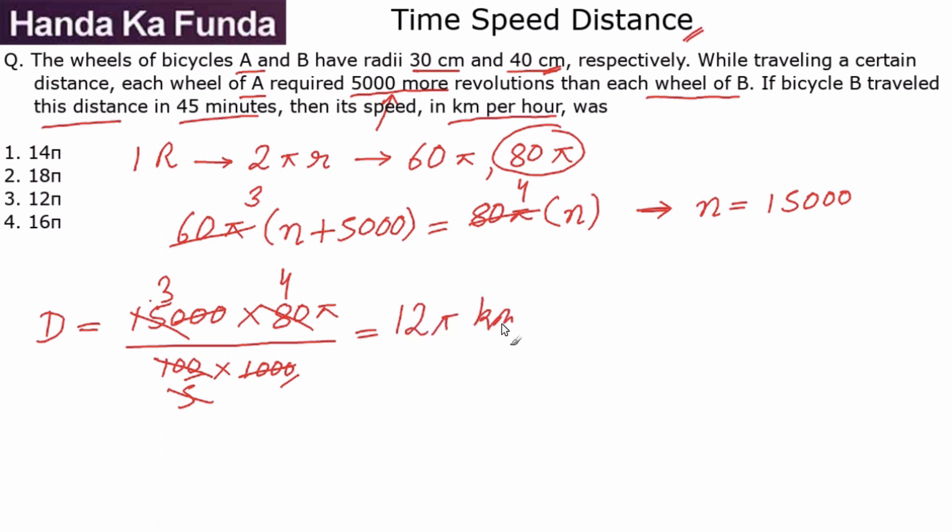Now I have the distance. The question is asking me about the speed in kilometers per hour, so my distance is 12π kilometers, my time taken is 45 minutes. In hours it is 3/4, so how much is this? 3 and 12 get cancelled, I get 4, or I get my answer as 16π kilometers per hour.